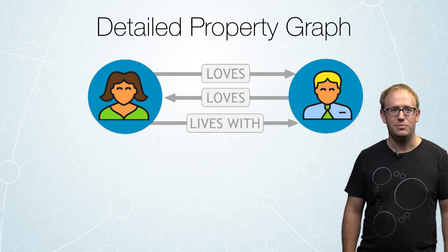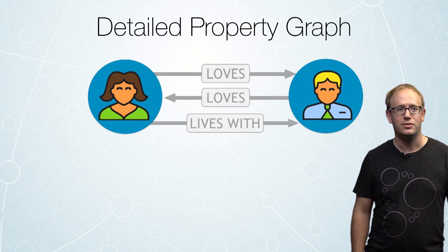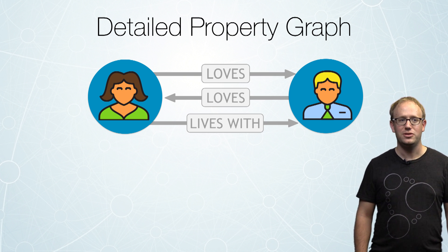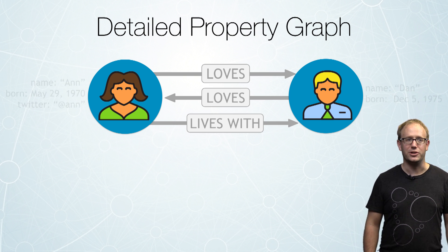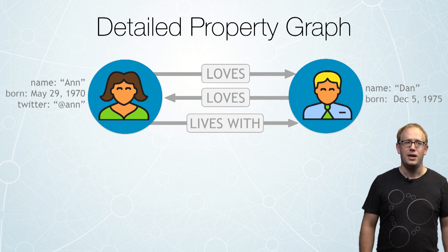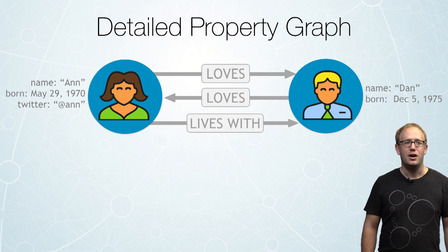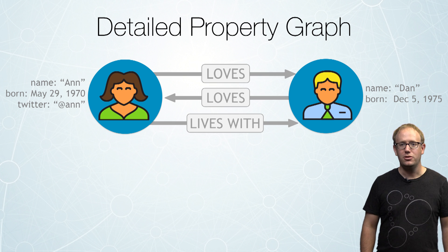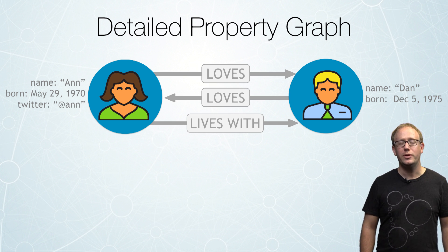So we have these three relationships. I called it the property graph, so let's add some properties. In this case, we want to represent the name of Ann and the name of Dan, in addition to their birthdate.